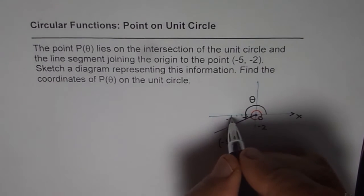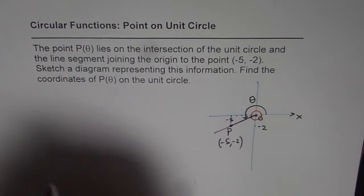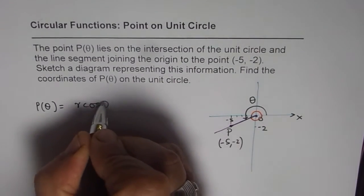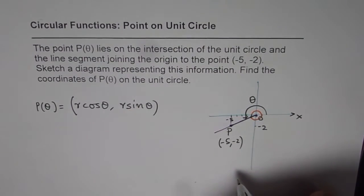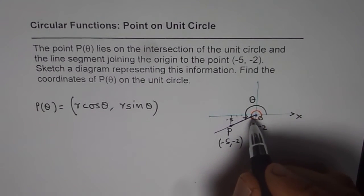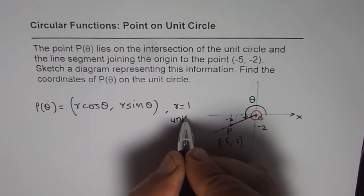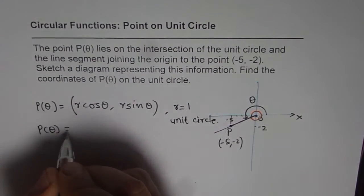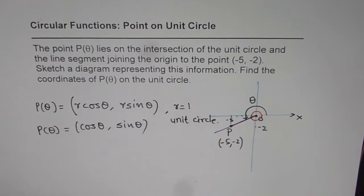So what we can do is think about a right triangle here. In polar coordinates we know what is P(θ). P(θ) equals to (r cos θ, r sin θ). So these are the x and y values of any point on this line segment where r is the radius. Now for unit circle r is 1. And therefore we can write that P(θ) is actually equal to (cos θ, sin θ). So I hope you understand the concept.